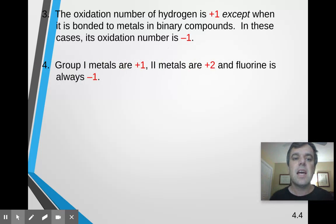Next, a group 1 metal, that would be your alkali metals, they're always a positive 1 charge. Your group 2 metals, your alkaline earth metals, are always a positive 2. And fluorine is always a negative 1 charge. There's no exceptions to those rules.